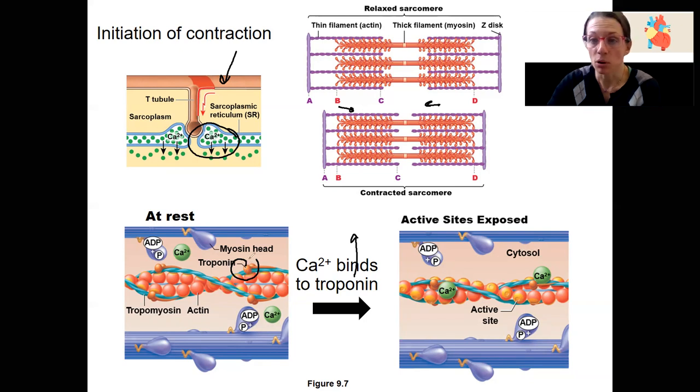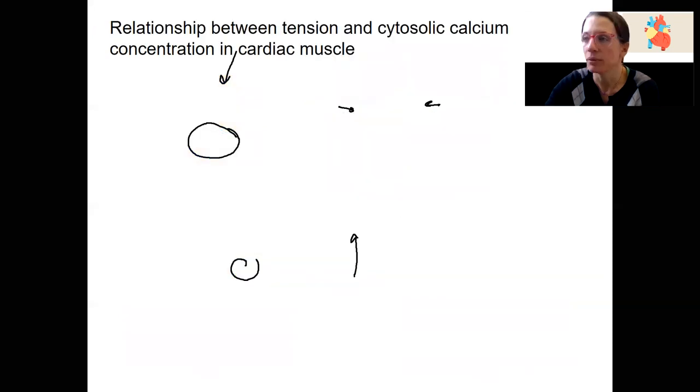So calcium is important for initiation. Calcium levels are going to help determine contractility of our cardiac muscle. I'm going to draw you the relationship between tension generated in the muscle and calcium in the cytosol.